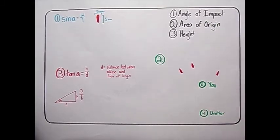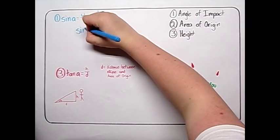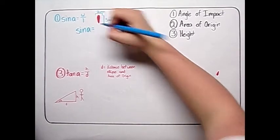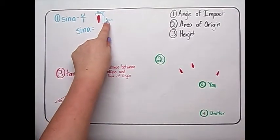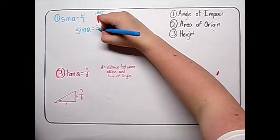First, in order to find the angle of impact, we will use the equation sine of A equals width divided by length. Width and length refer to the dimensions of the ellipse or the shape a liquid makes when it falls to earth. In this case, the liquid is cranberry sauce and the dimensions are 2 millimeters by 5 millimeters.